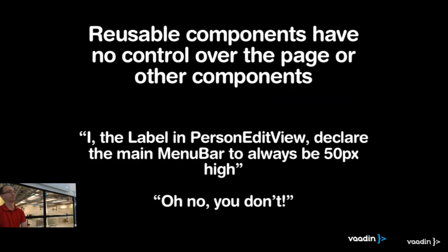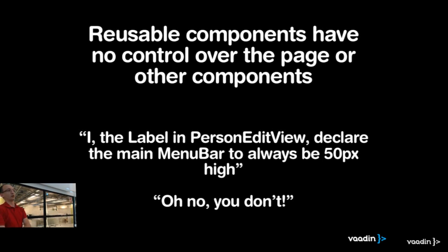The problem comes when you try to do reusable components, because they have no control over how high the header is or anything else outside the component. It would be pretty strange if a label in your person edit view could suddenly declare that the menu bar is always 50 pixels. In reality it doesn't work that way — the component can only affect itself.